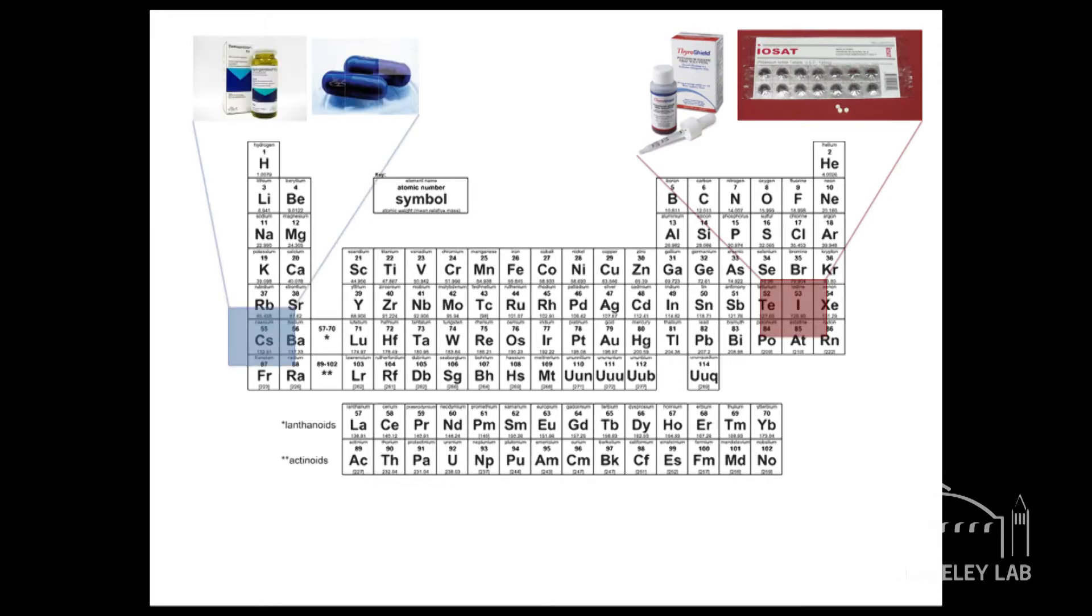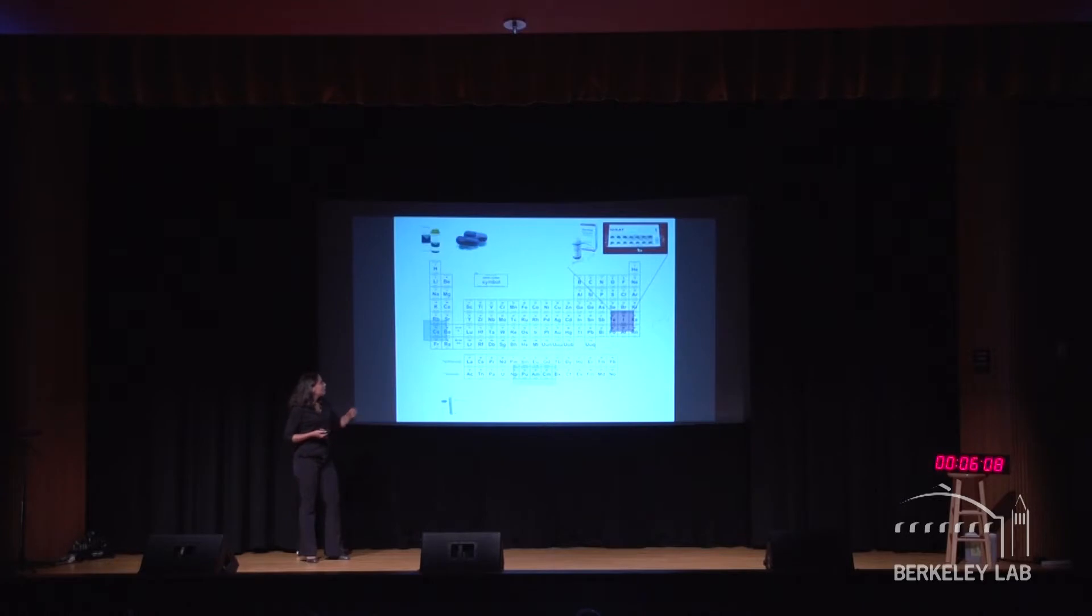Most people have heard of potassium iodide to remediate radioactive iodine. There's Prussian blue for cesium, radioactive cesium. And there's DTPA that helps with scarier elements like plutonium. Plutonium was discovered at Berkeley.